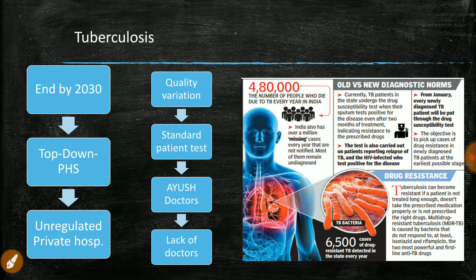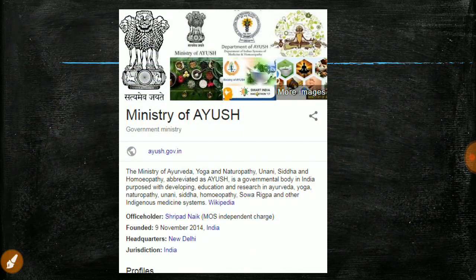Since the number of doctors in India is very limited, AYUSH doctors can be given a bridge course to bring them on par with doctors who treat tuberculosis, giving them access to relevant capabilities and technologies. AYUSH stands for Ayurveda, Yoga, Naturopathy, Unani, Siddha, and Homeopathy. This Ministry was formed in 2014 and its headquarters is in New Delhi.